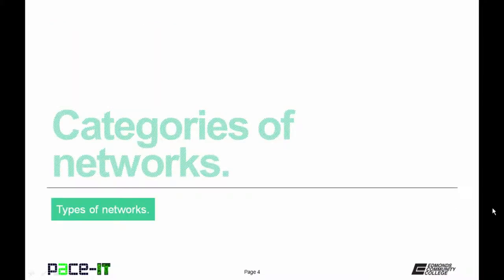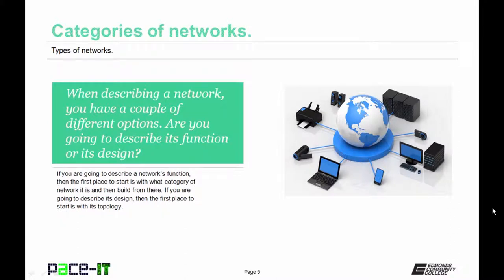Let's start by talking about categories of networks. When you're describing a network you have a couple of different options. Are you going to describe its function or its design? If you're going to describe the network's function, then the first place to start is with what category of network it is. If you're going to describe its design, then start with its topology. We're going to start with categories of networks.